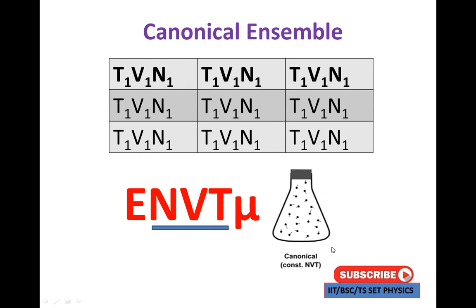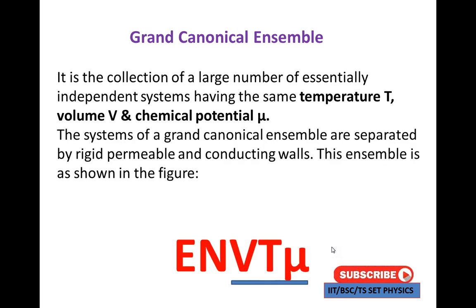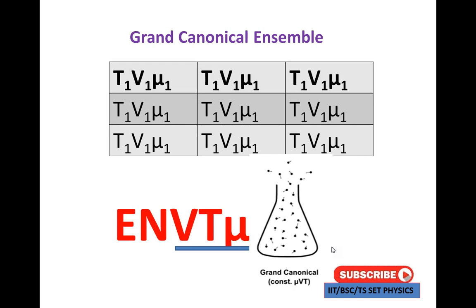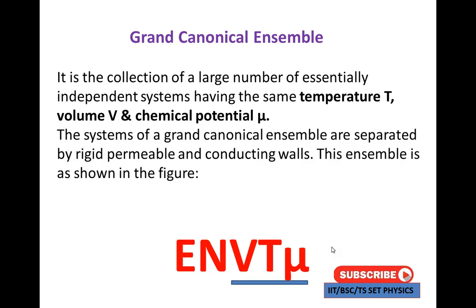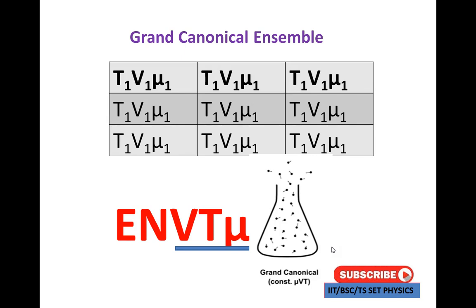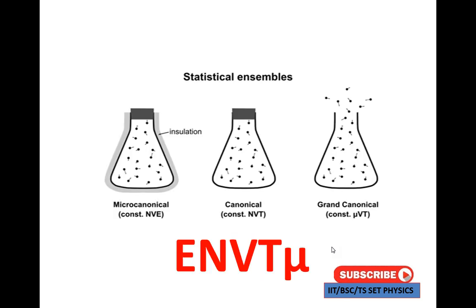In the grand canonical ensemble, energy can transfer through the walls. We show temperature, volume, and chemical potential μ. The walls are semi-permeable — both closed and open — allowing particles to exchange. When there is a chemical potential, it drives the change. The full variable set is E, N, V, T, μ. In summary, the three ensembles are: micro-canonical, canonical, and grand canonical, encoded as ENVTμ.